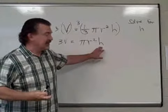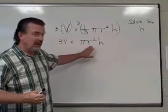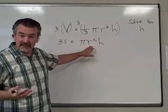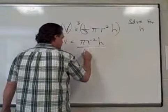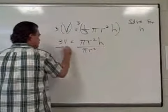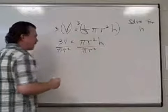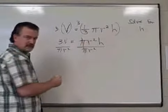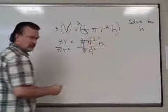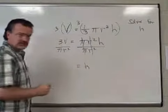And now, to isolate the h, I need to get rid of the pi and the r squared that are acting kind of as a coefficient for h. So I'll divide both sides by pi r squared. Pi over pi is 1, r squared over r squared is 1, leaving us h.